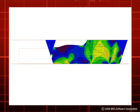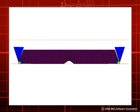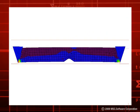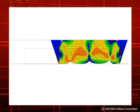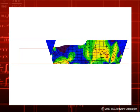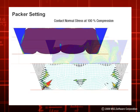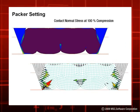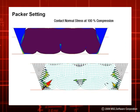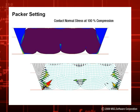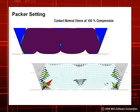Once this step is completed, we can determine the maximum stress and strain in the packer and get a better understanding of where the material may fail. We can also look at the contact pressures between the packer and casing walls to determine if the packer provides enough energy to maintain the seal under pressure.